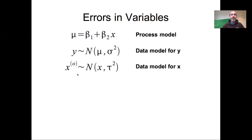In addition to a data model for Y, we're adding a data model for X. We have some set of observed X's — X superscript O — that are normally distributed around the true value of X, given some observation error tau. So sigma is the error in the Y direction and tau is the observation error in the X direction.